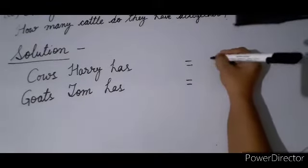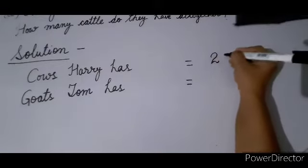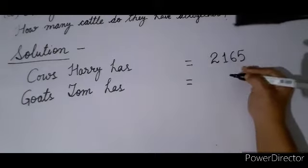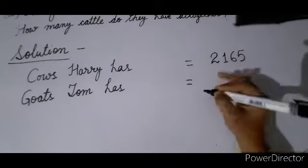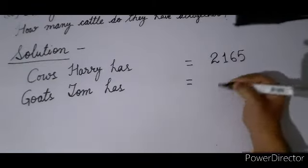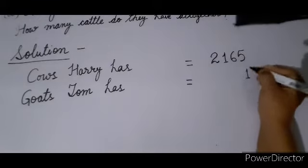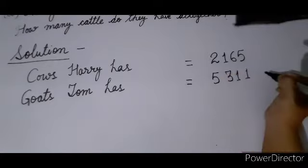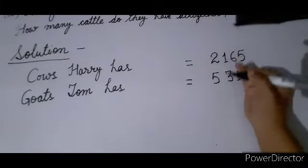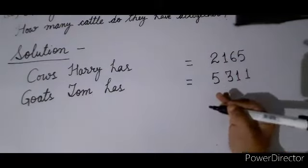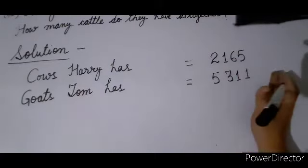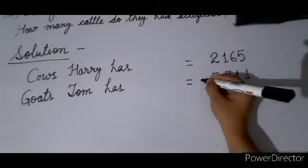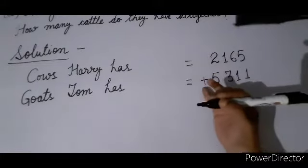Now, how many cows does Harry have? Write 2165 in very clear handwriting, because you also have to add. If your numbers are left-right misaligned, you will have a problem adding. For the goats Tom has — from the right side: 1, 1, 3, and then 5. Make sure no numbers are misaligned, otherwise your addition answer will be wrong.